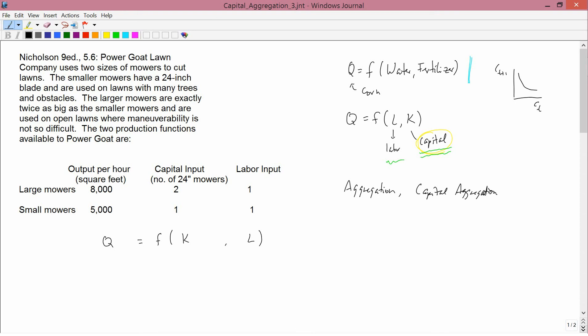Having clarified what aggregation means in the context of consumer theory, now let's go back to our discussion of producer theory and of capital.